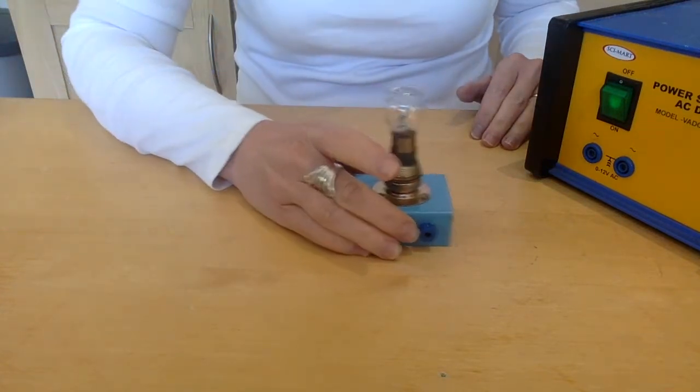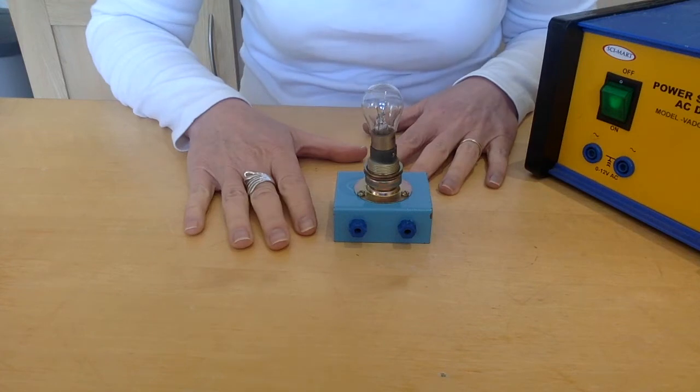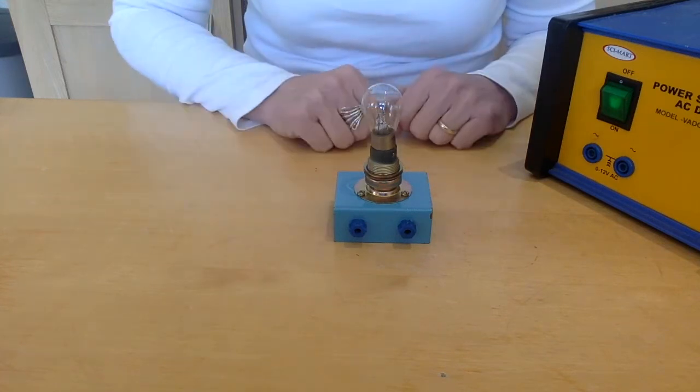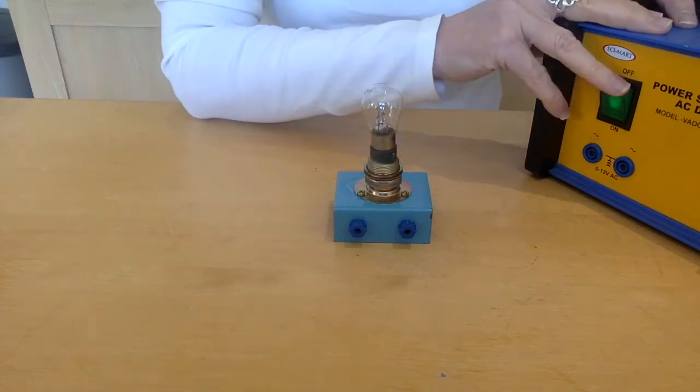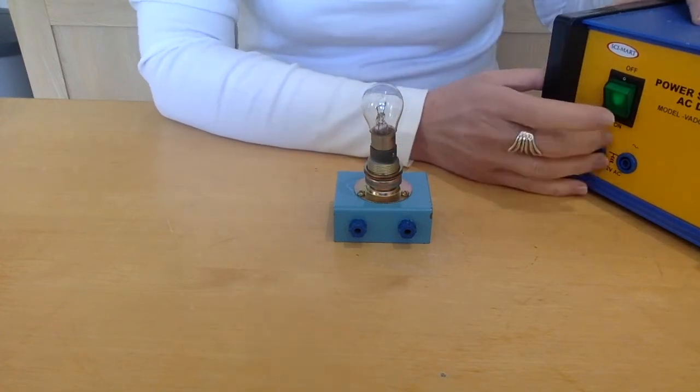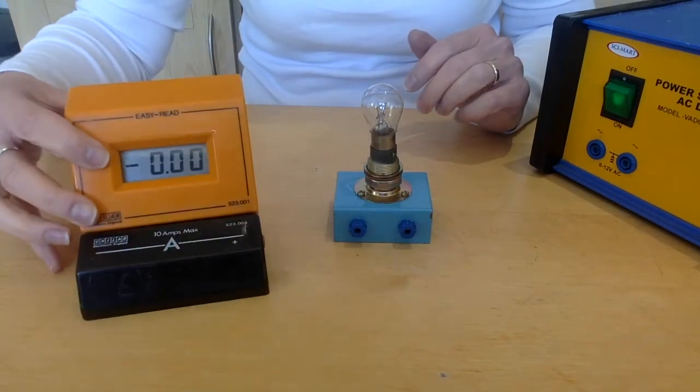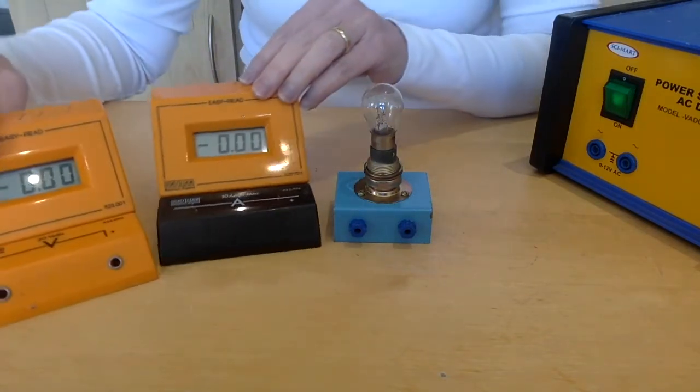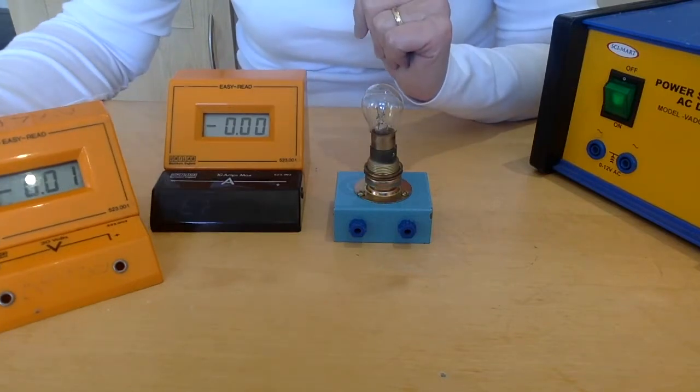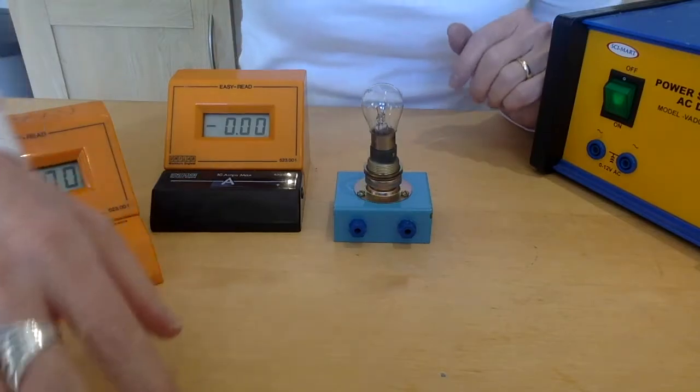Okay so to do this experiment we need to build a circuit. We're going to use the power pack as our supply, and if we're measuring current we're going to need an ammeter, and if we're measuring voltage we're going to need a voltmeter. So I'm going to build this circuit right now.